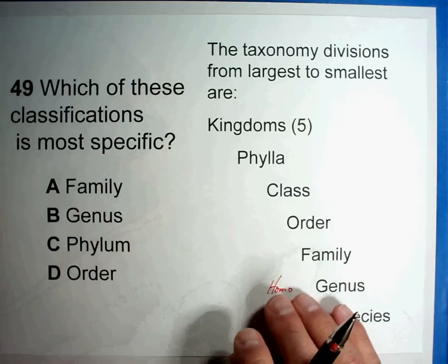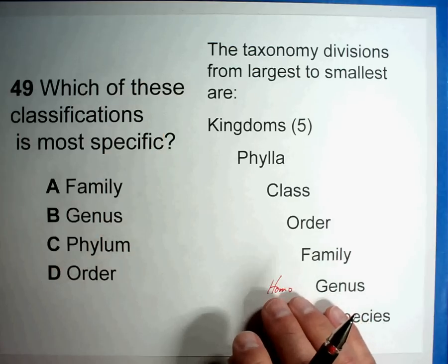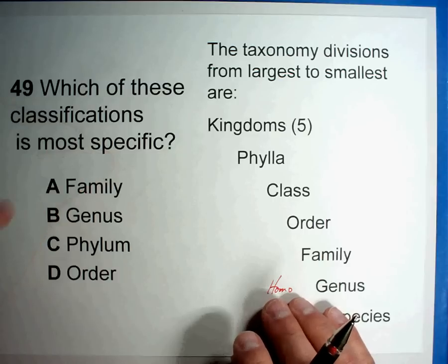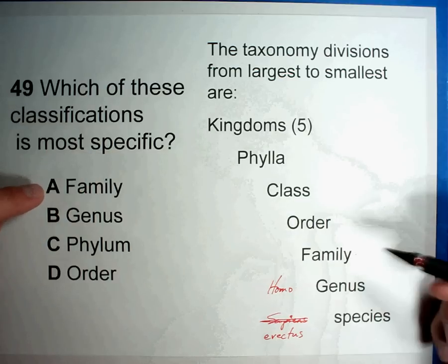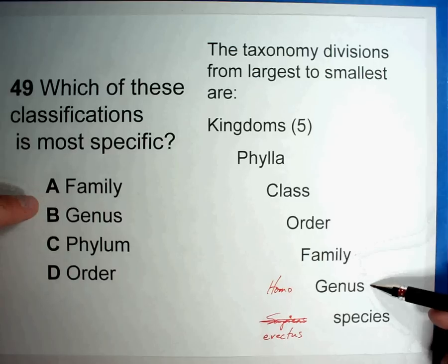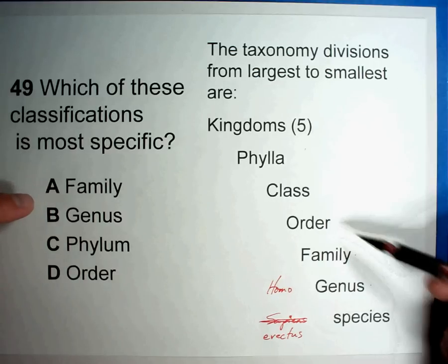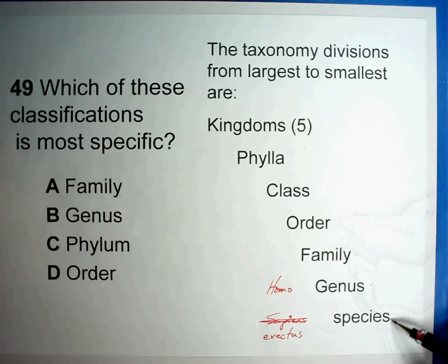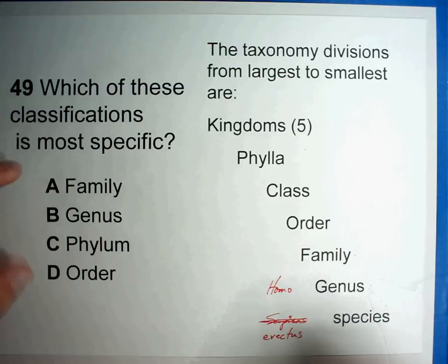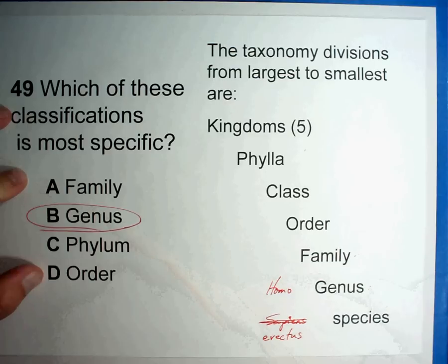The question here asks: which of these classifications is the most specific? From the answers given — family, genus, and phylum — the most specific is going to be closest to species. So the answer in this case is genus. A very simple question if you understand basic taxonomy.